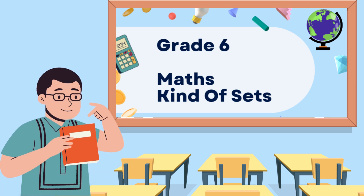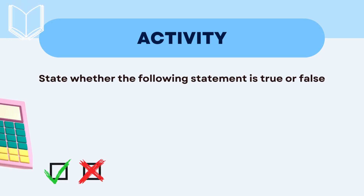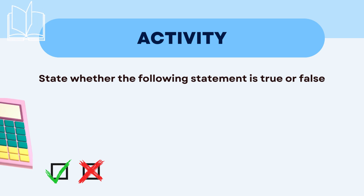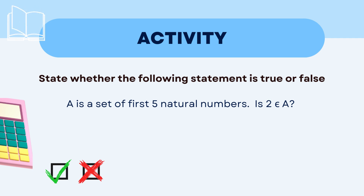Hello students. In today's lesson let's do a bit of activity. We have a question where we need to answer in true or false: set A is a set of the first five natural numbers, and is element 2 a member of the set?